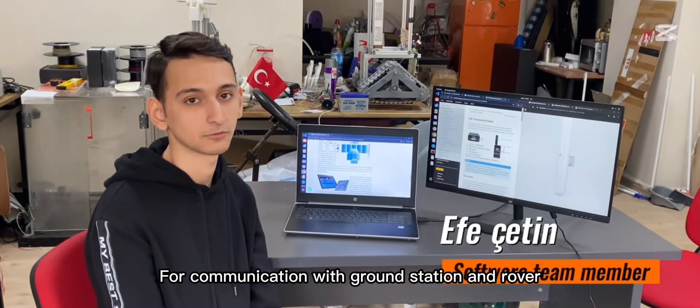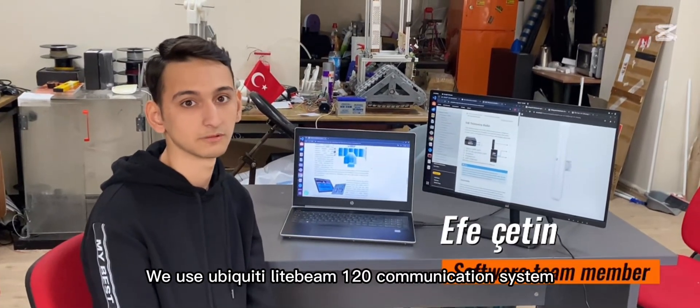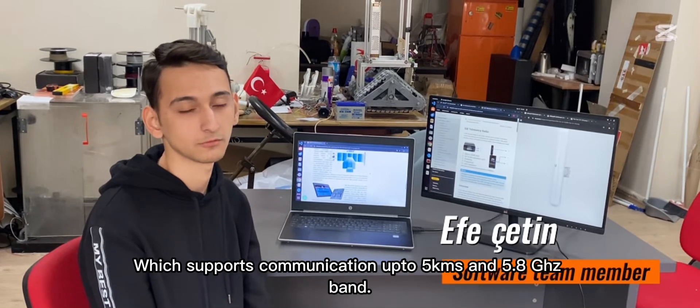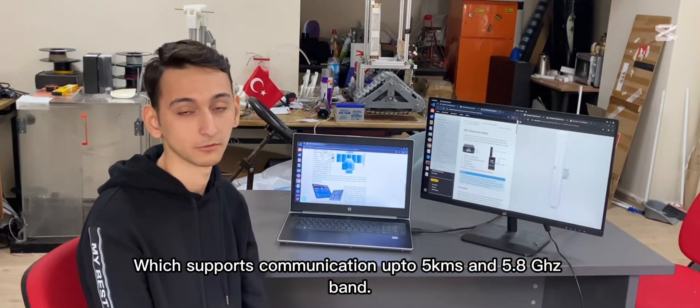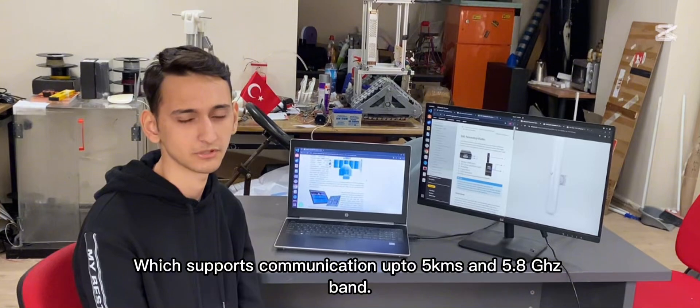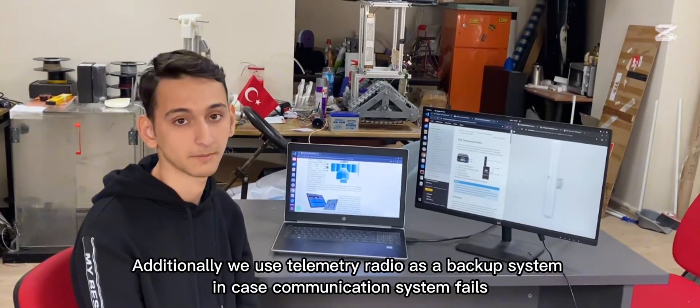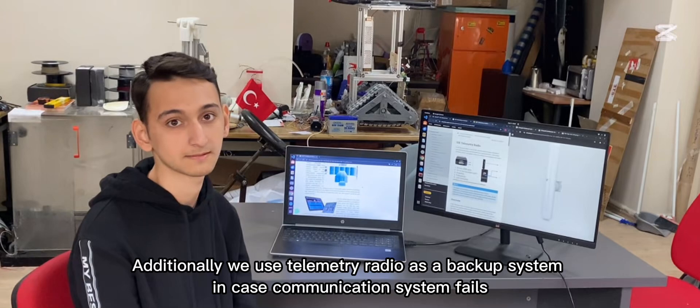In the ground station and rover, we use a LightBridge One-To-Aider as main communication system, which supports communication up to 5 km at 5.8 GHz bands. Additionally, we use a telemetry radio as a backup solution in case the main communication system fails. We enable teleoperation from ground station using both keyboard and joystick control.